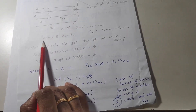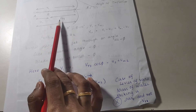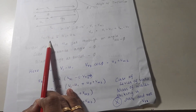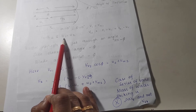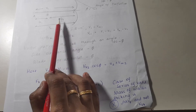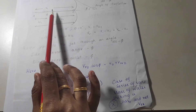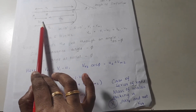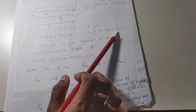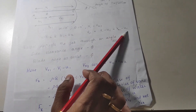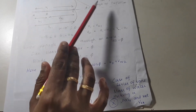If the vane is very smooth, we can take vr1 equal to vr2 — that is, relative velocity at the inlet equals relative velocity at the outlet. Also, vane velocity u1 equals u2. So vr1 equals v1 minus u1. Since v1 equals vw1 (because alpha equals zero and theta equals zero), we can write vr1 as vw1 minus u1.